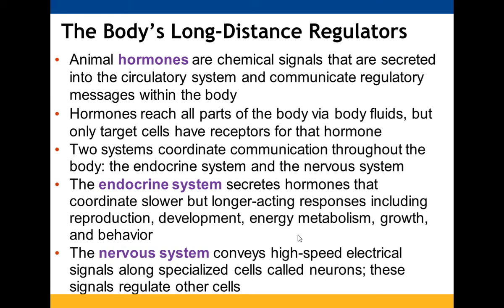There are two systems that coordinate communication throughout your body: your endocrine system and your nervous system. Endocrine system hormones go out throughout the whole body — they produce longer-acting responses and take a little longer to get going. They impact processes such as reproduction, development, metabolism, growth, and behavior. The nervous system uses high-speed electrical signals along neurons to regulate specific cells.